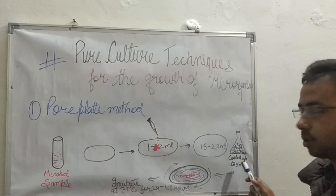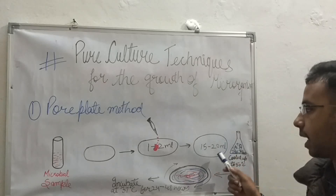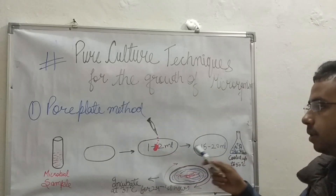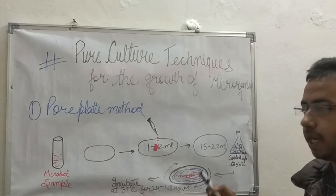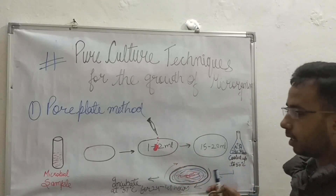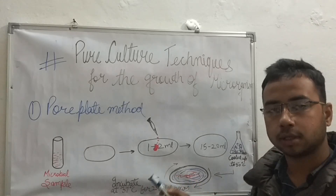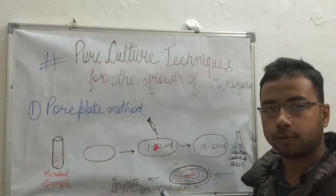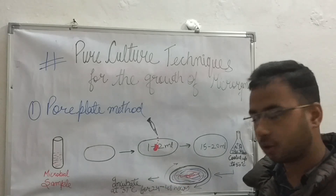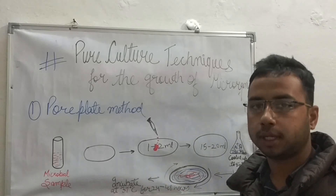After combining the agar with the one or two ml of microbial sample, we just shake it and incubate at 37 degrees Celsius for 24 to 48 hours to obtain microbial culture growth. This completes the pour plate method.